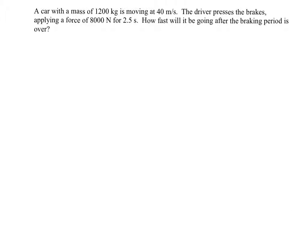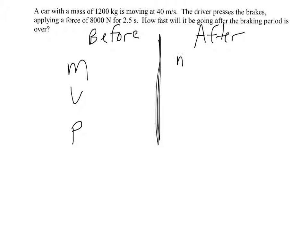Here's another problem. Very similar. Same thing. We have a car, and we can use an MVP chart. So we've got the car before, and we've got the car after. So mass, velocity, momentum, mass, velocity, momentum. The car's mass is 1,200 kilograms, both before and after.